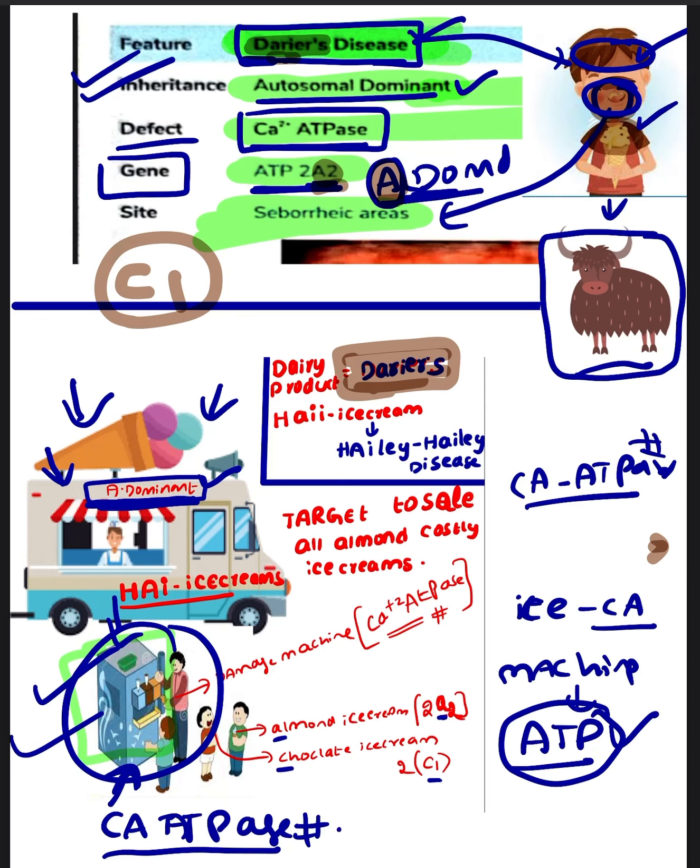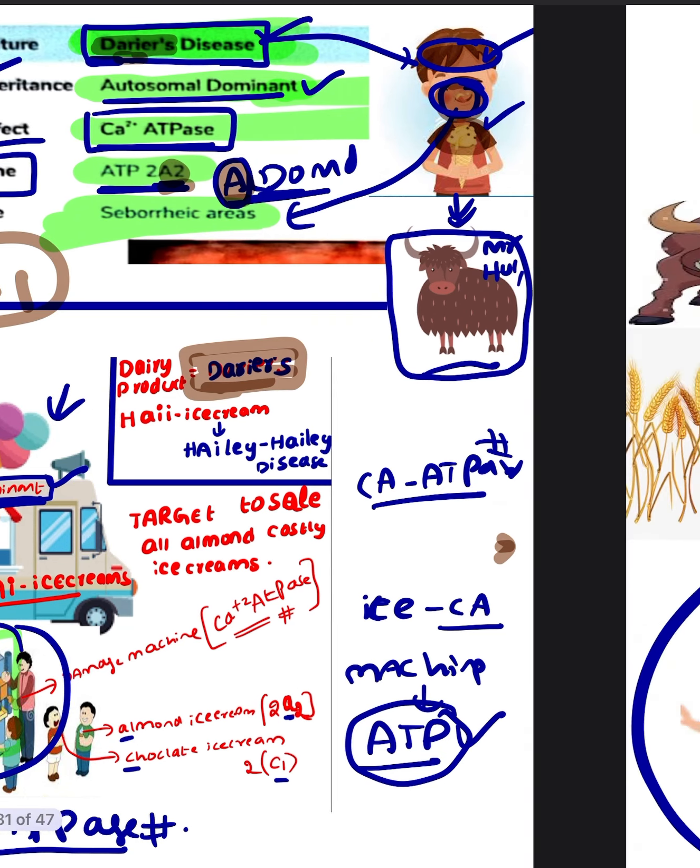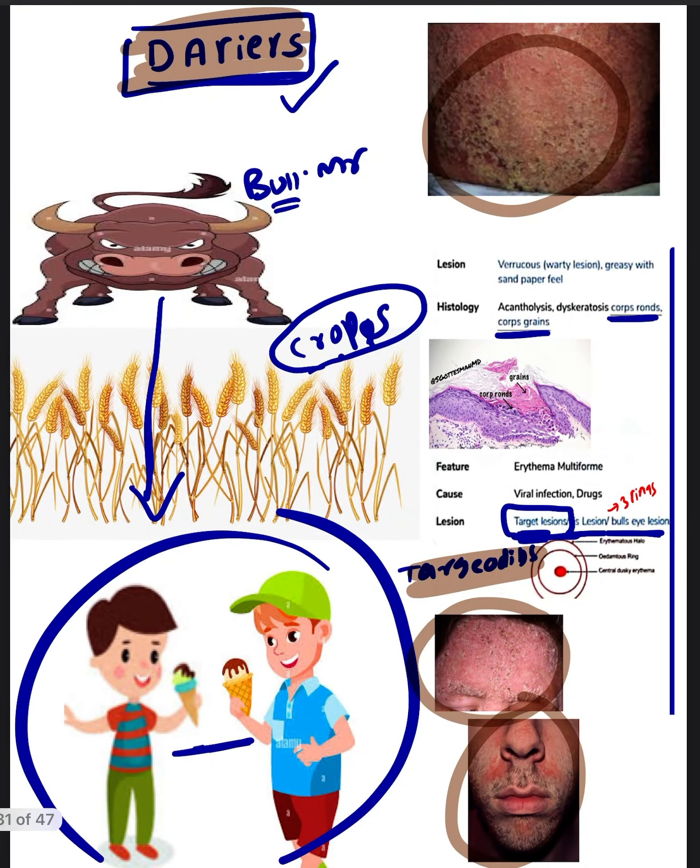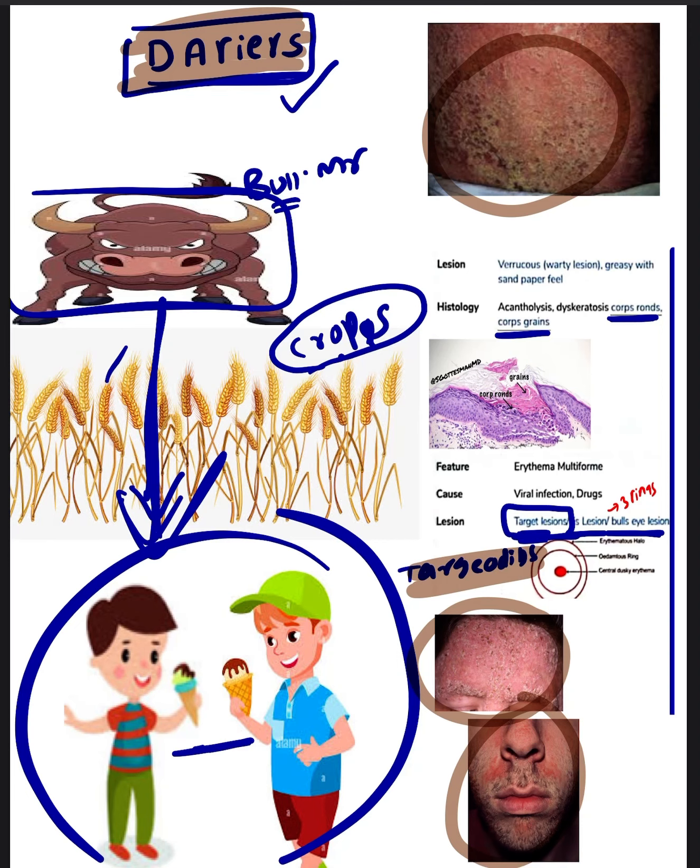Now the mnemonic is: This boy and his sister are bullied by his friend, so he tells his friend Mr. Bull to take revenge on those boys. This bull is ready to take revenge on these boys. This bully targets these boys, and the bully is standing behind the crops. Why did I add crops to my mnemonic?